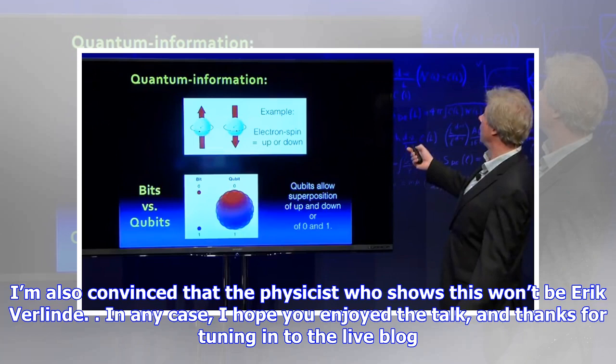Too bad. No addressing of the quantitative aspects of his idea. It was interesting to listen and I'm glad I've heard it, but I'm more convinced that this is a cherry-picked solution he claims to have come up with, and that the details, particularly as the universe evolves, won't turn out to be consistent. I'm also convinced that the physicist who shows this won't be Eric Verlinde. In any case, I hope you enjoyed the talk, and thanks for tuning in to the live blog.